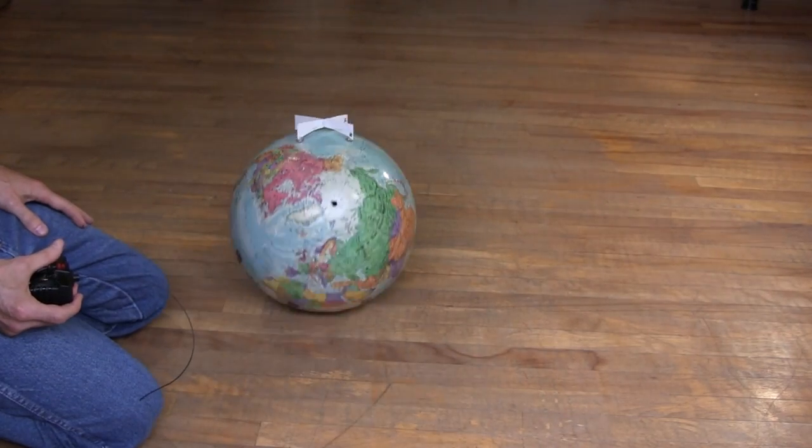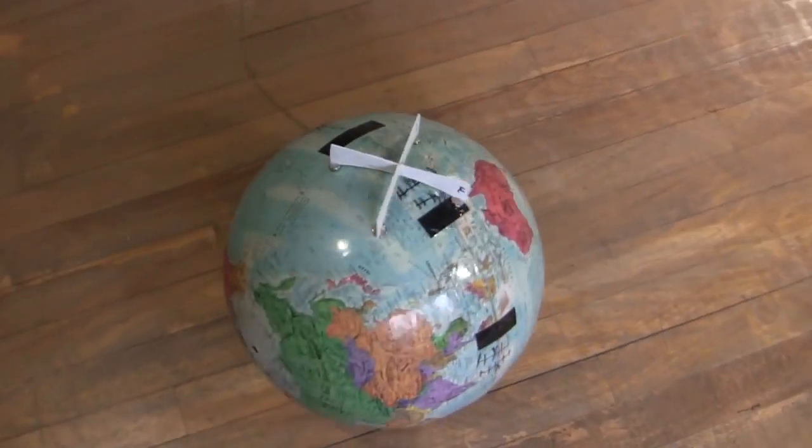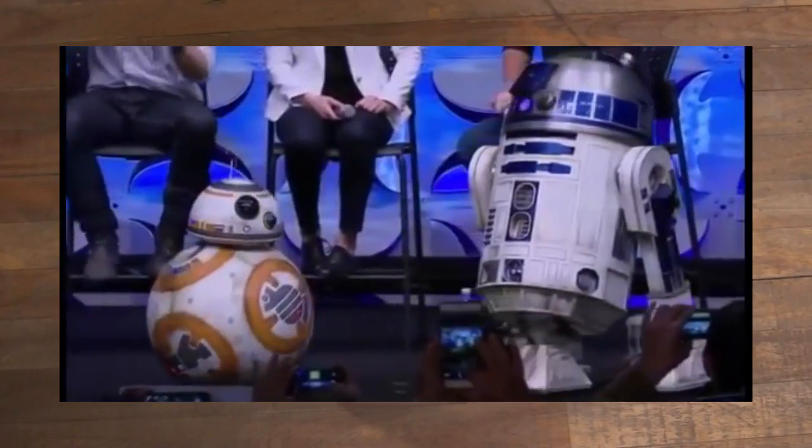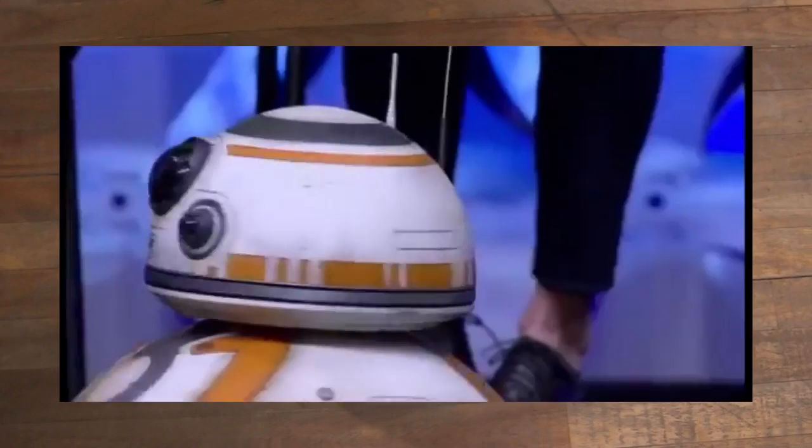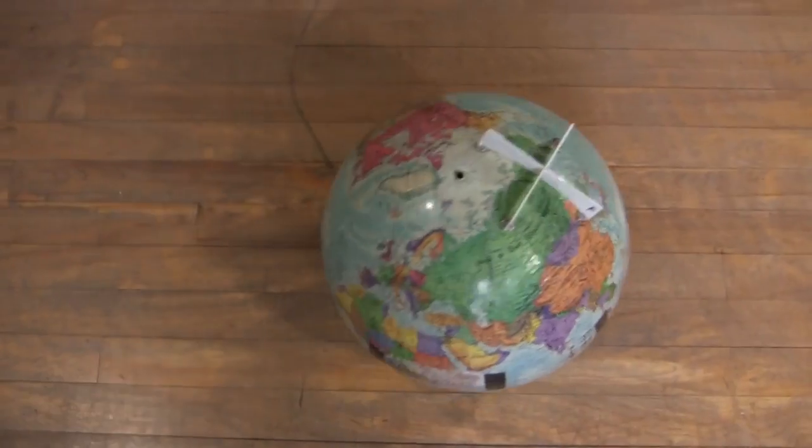Hi gang! This is my first attempt at making a cheap BB-8 droid. In case you're not familiar with what that is, it's a new droid introduced in the Star Wars The Force Awakens movie. When I first saw it, I just had to try and make one. And this is what I came up with as an initial cheap version.